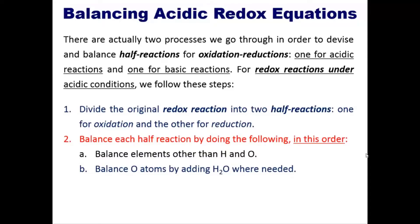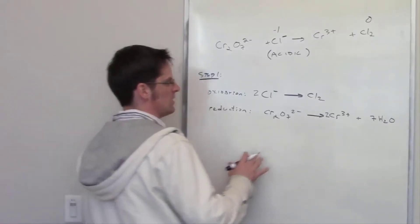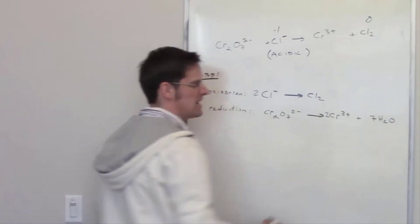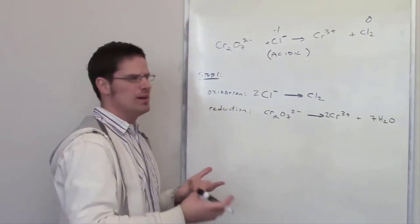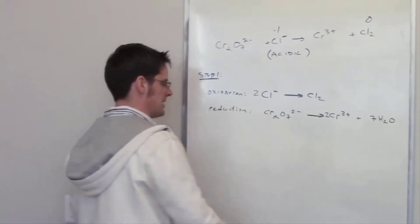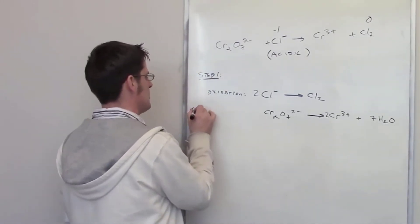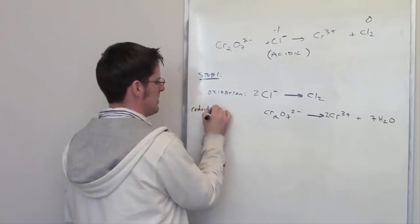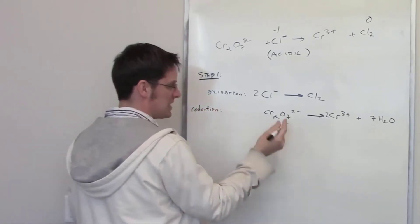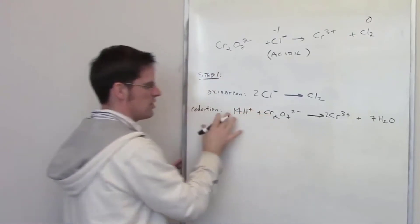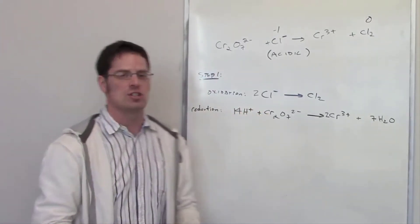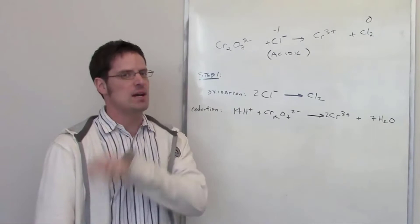The next step says to balance hydrogen atoms by adding H⁺ where needed. By adding the seven H₂O molecules, we now have 14 hydrogen atoms on the right that weren't there before. To fix that, I add 14 H⁺ to the left side of the reduction half reaction. Hydrogens are now balanced.